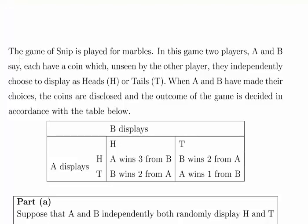In this presentation we're going to look at a game theory example. The game of SNP is played for marbles. In this game, two players A and B each have a coin which, unseen by the other player, they independently choose to display heads or tails.